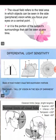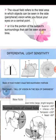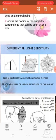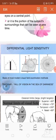Here is an image of the differential light sensitivity. On the basis of most modern visual field examination methods, there is a concept called the hill of vision in the sea of darkness.